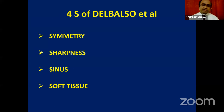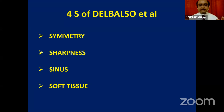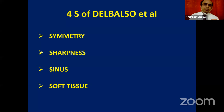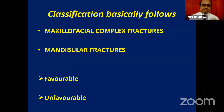The four S signs described by Del Balso include: loss of symmetry of structures when evaluating CT, MRI, or CBCT; alteration in sharpness of the structure; sinus pathology visible on imaging; and soft tissue encroachment such as orbital fat encroaching into the floor of the sinus. These signs help identify traumatic lesions in the maxillofacial region.